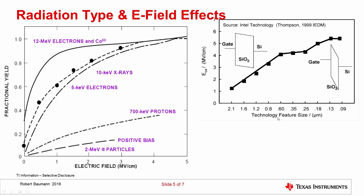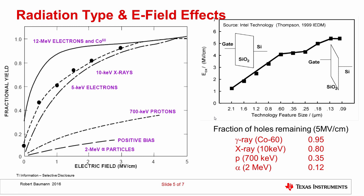To calibrate this, electric field is in megavolts per centimeter. This chart shows technology nodes from 2 microns down to 90 nanometers, and you can see that the electric field in gate oxides has been increasing with each technology node. In modern technologies we're in the 5 to 6 megavolts per centimeter range, so fractional yield will be very high. At 5 MV/cm with gamma rays (cobalt-60), 95% of charge is remaining. With X-rays, about 80%. With protons, 35%, and alpha particles only about 12% of the generated charge is finally trapped in the oxide.